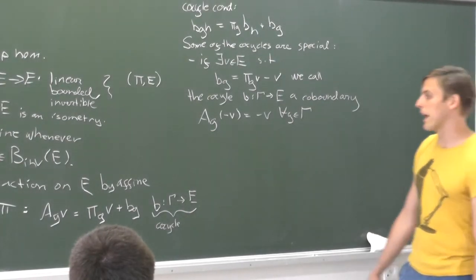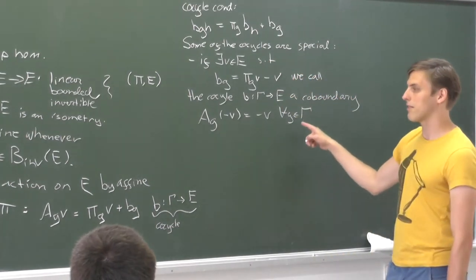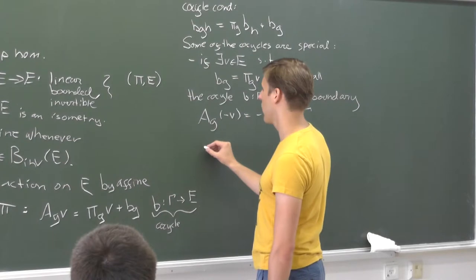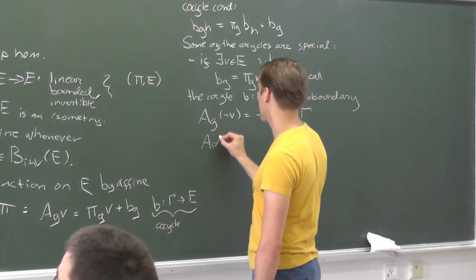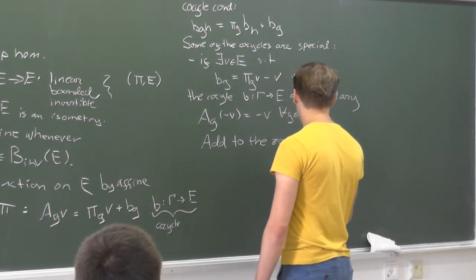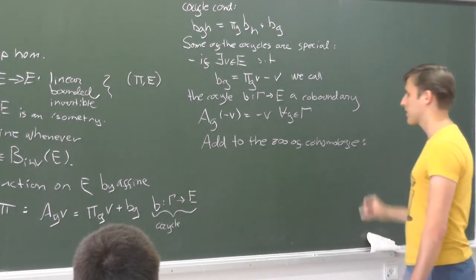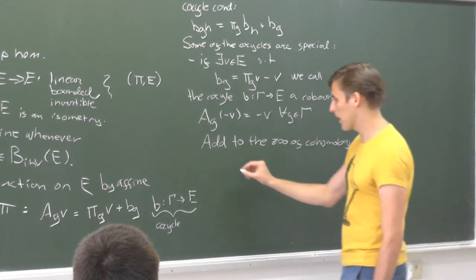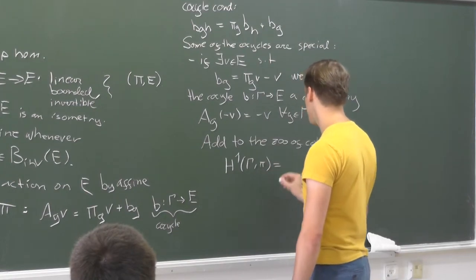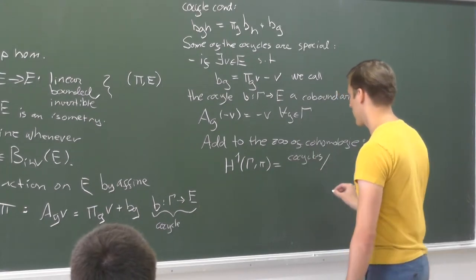Now we see that affine pi-actions where the cocycle is a coboundary have a fixed point. Let's add to the zoom of cohomologies. We define the one-cohomology of the group gamma with respect to a representation as the cocycles modulo coboundaries.